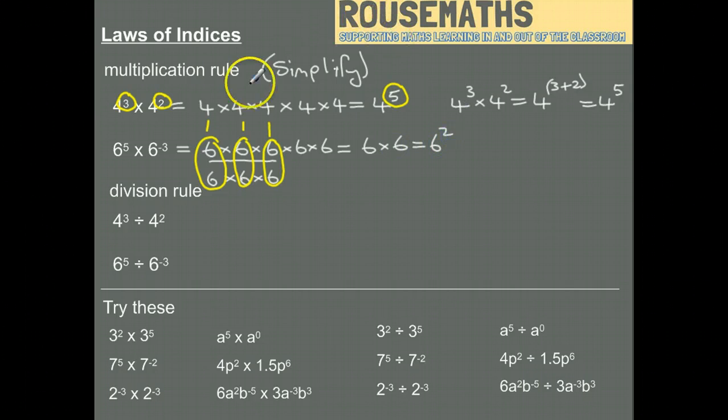Which means we end up with essentially 6 times 6, which is 6 squared. You'll notice that if we do 5 plus negative 3, we get 2. So if I just write that again: 6 to the power of 5 times 6 to the minus 3, we can just do 6 to the power of 5 plus negative 3, which is 6 to the power of 2. So for both my multiplications, you can just add the two powers together.